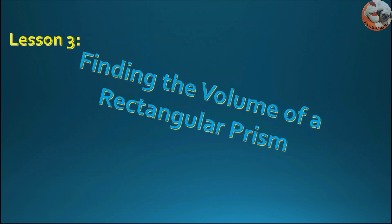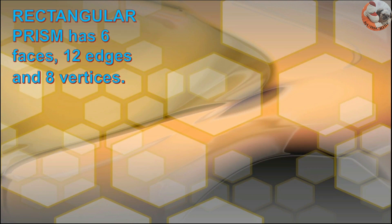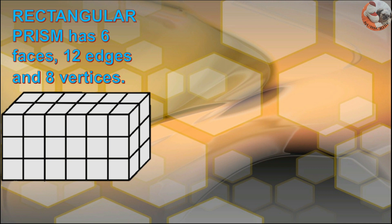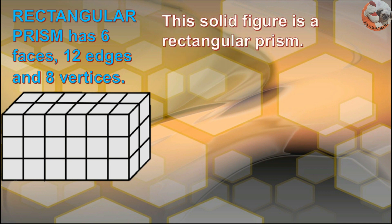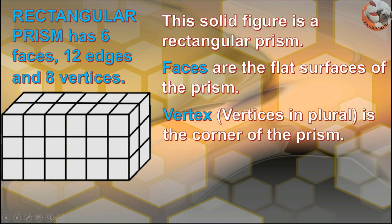Lesson 3: Finding the volume of a rectangular prism. A rectangular prism has 6 faces, 12 edges, and 8 vertices. This solid figure here is a rectangular prism. Faces are the flat surfaces of the prism. Vertex, or vertices in plural, is the corner of the prism.